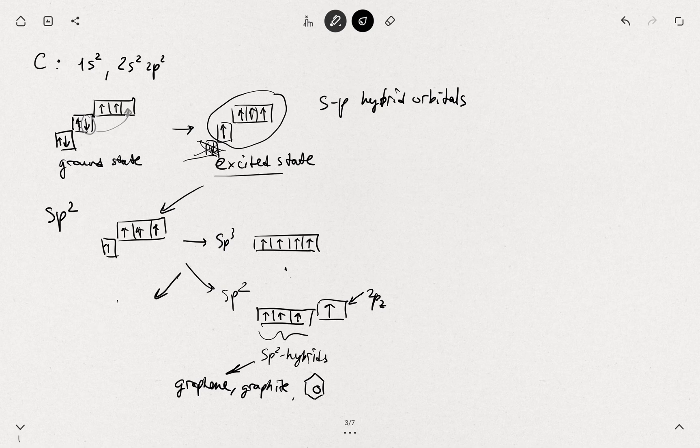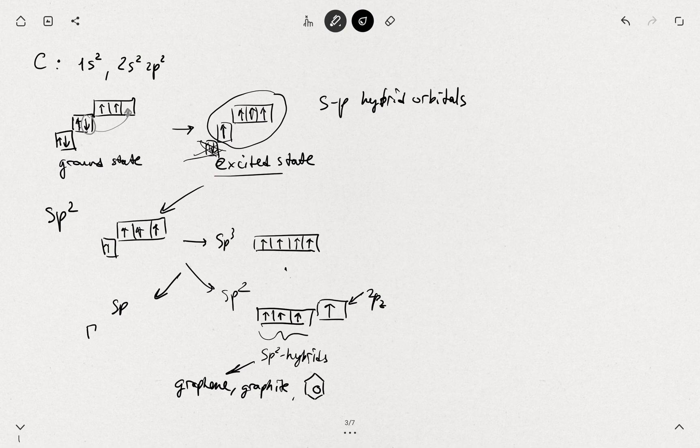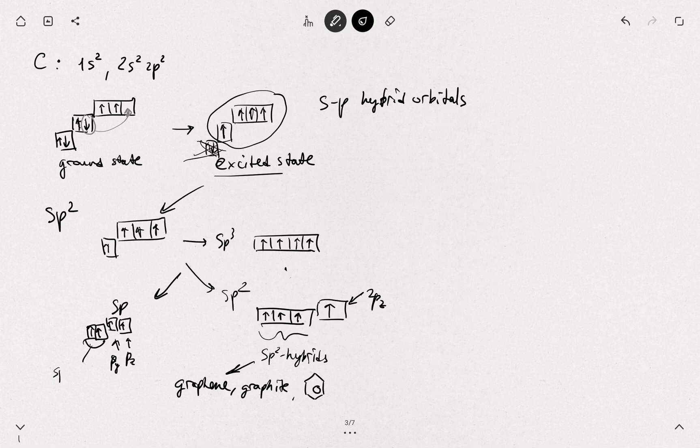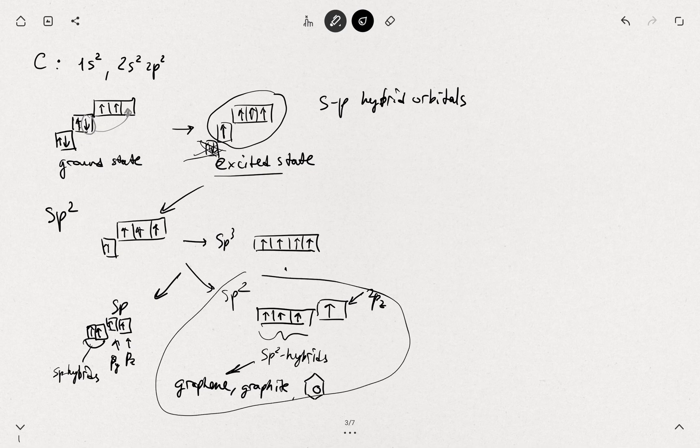And then you also have sp-hybridization like acetylene, where you have 2 hybrids and 2 unpaired py and pz orbitals. And this is 2 sp-hybrids. So now if we focus on the sp2 hybridization.